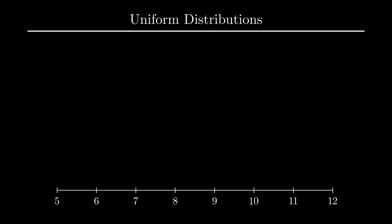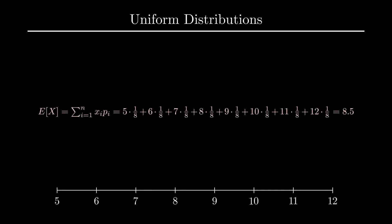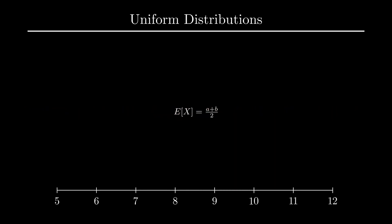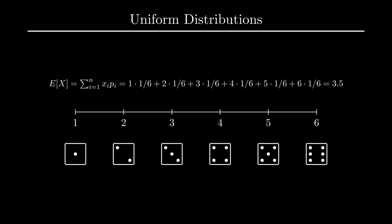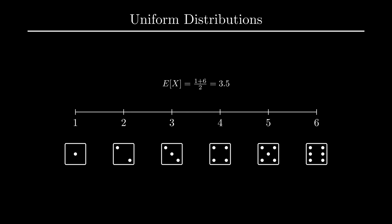To compute the expected value of the distribution, for example, we don't need to fully expand the formula for the expected value. Instead, we can just take the average of the bounds of the distribution by computing (A + B) / 2, or in this case, (5 + 12) / 2 = 8.5. In the dice example, we could expand the formula for the expected value to get 1 × (1/6) + 2 × (1/6), and so on — or we could just take the average of the bounds to compute the expected value much quicker.